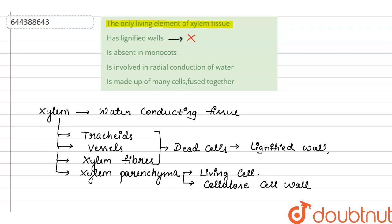Second statement is 'absent in monocots.' This is also wrong because monocots are also under angiosperm. All angiosperms will have both xylem and phloem.